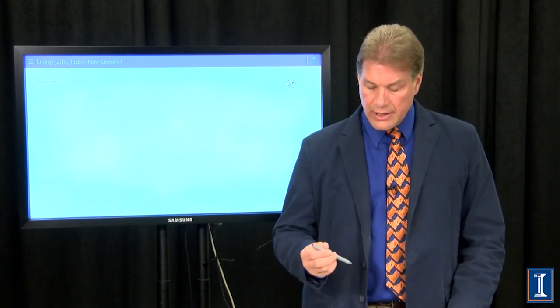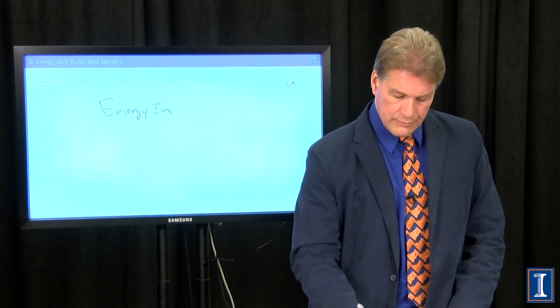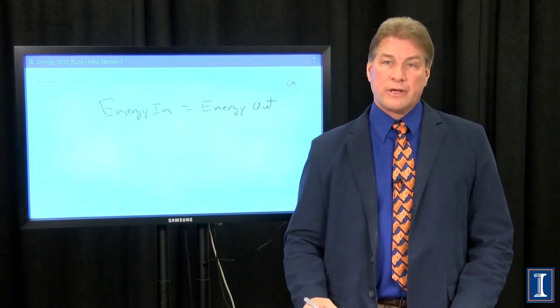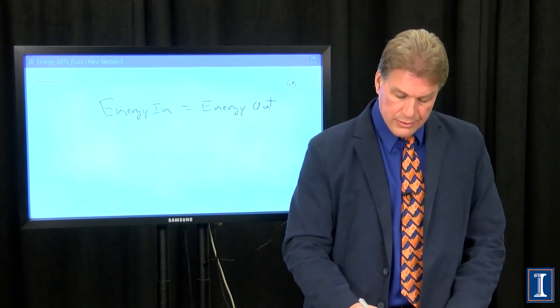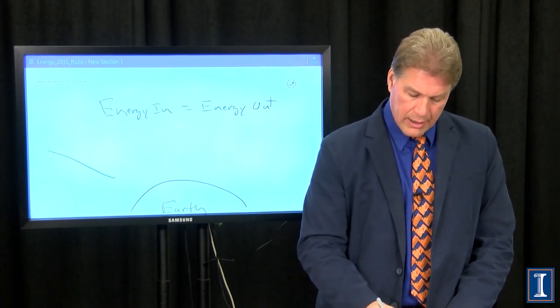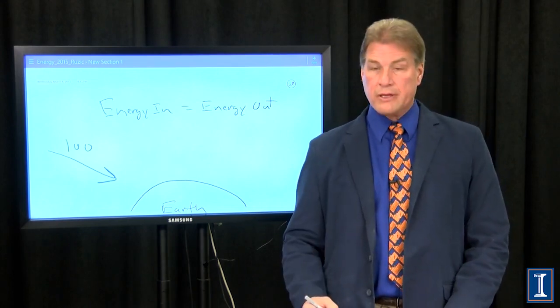So clearly this is not the whole story because the Earth is not minus 3 Fahrenheit. We still have energy in equals energy out, but there's some more energy being recirculated. So now let's use our same example and here's my Earth a little bit bigger. And I have my 100 units of energy coming into the Earth.